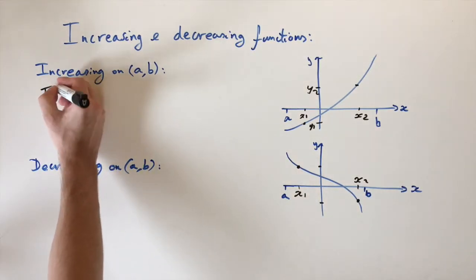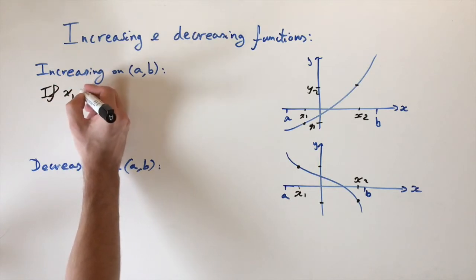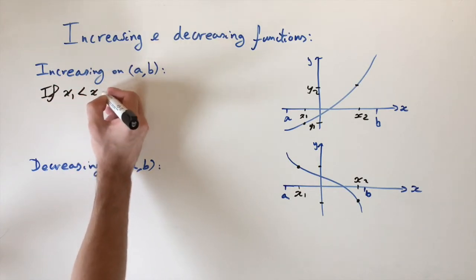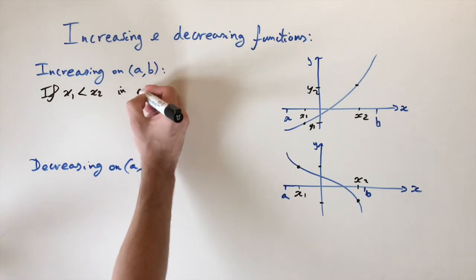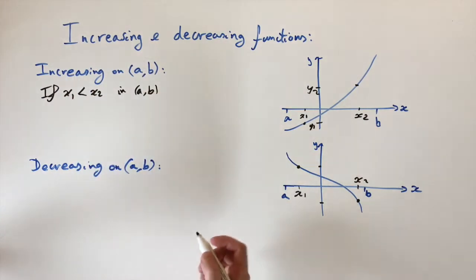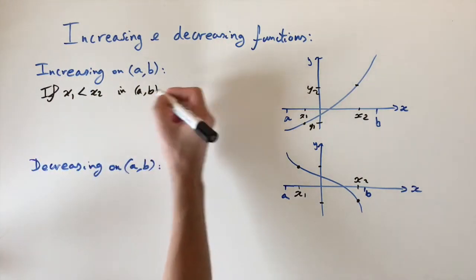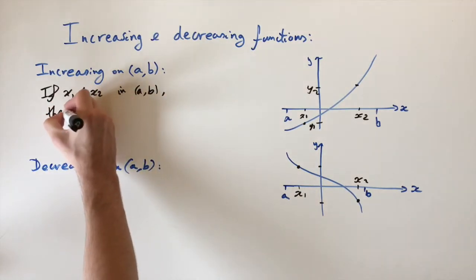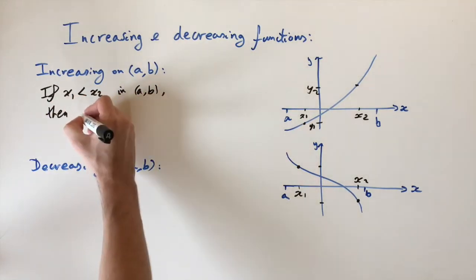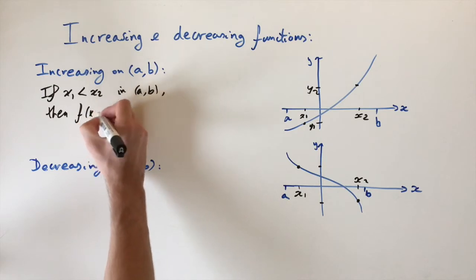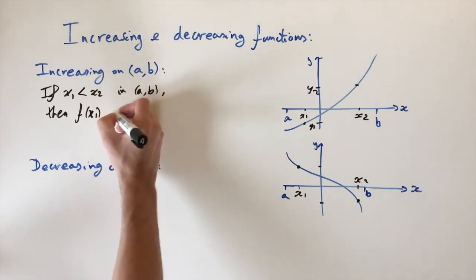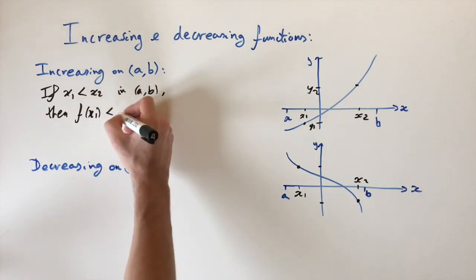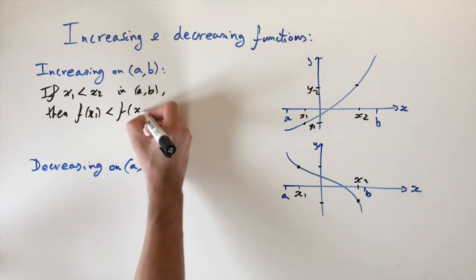So if we take two points, if x1 is less than x2 in (a,b) because we're just considering these properties in this interval, then if it's increasing, then we must have then the outputs, which we're saying, I'm just going to call it f(x1) here. A bit messy. f(x1). Then this is less than, strictly less than, f(x2).